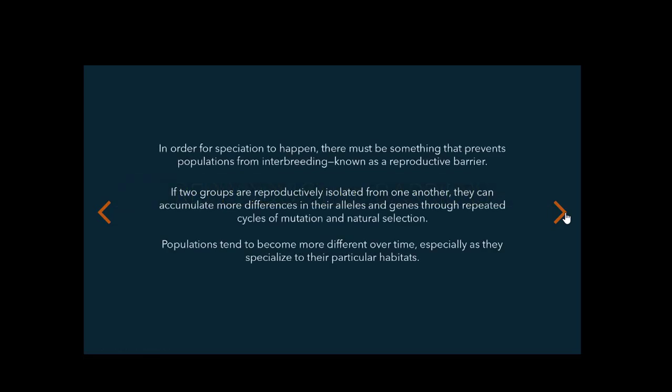In order for speciation to happen, there must be something that prevents populations from interbreeding, known as a reproductive barrier.